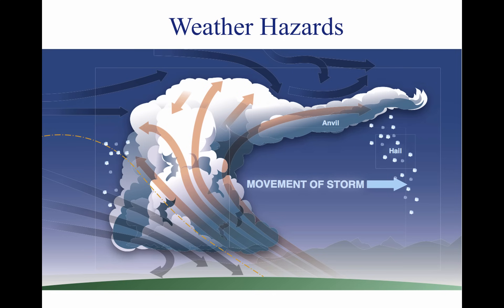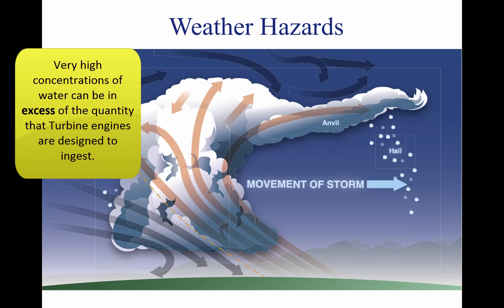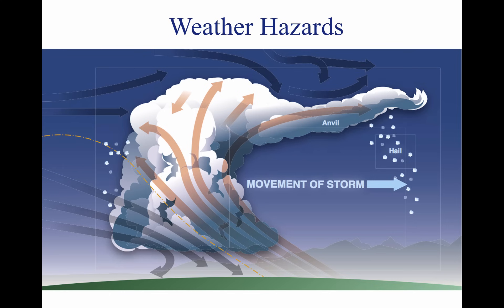Turbine engines have a limit on the amount of water they can ingest. Updrafts are present in many thunderstorms, particularly those in the developing stages. If the updraft velocity in the thunderstorm approaches or exceeds the terminal velocity of the falling raindrops, very high concentrations of water may occur. It is possible that these concentrations can be in excess of the quantity of water turbine engines are designed to ingest. Therefore, severe thunderstorms may contain areas of high water concentration which could result in flame-out and structural failure of one or more engines.